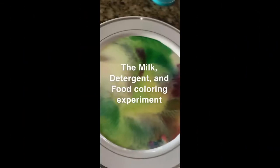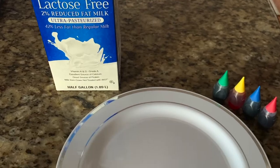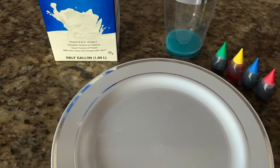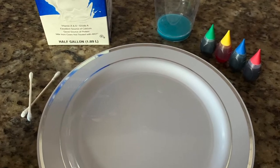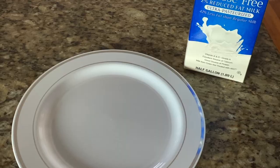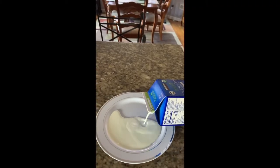This is the milk, detergent, and food coloring experiment. The first thing we need to do is gather all the materials: food coloring, paper plate, milk, detergent, and a q-tip.